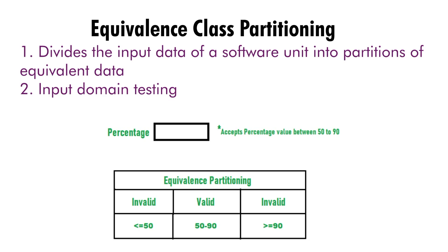Let's consider this example. This is a percentage text box and the requirement is to accept percentage values between 50 to 90. In equivalence partitioning, we divide this range into a few partitions or equivalence classes.